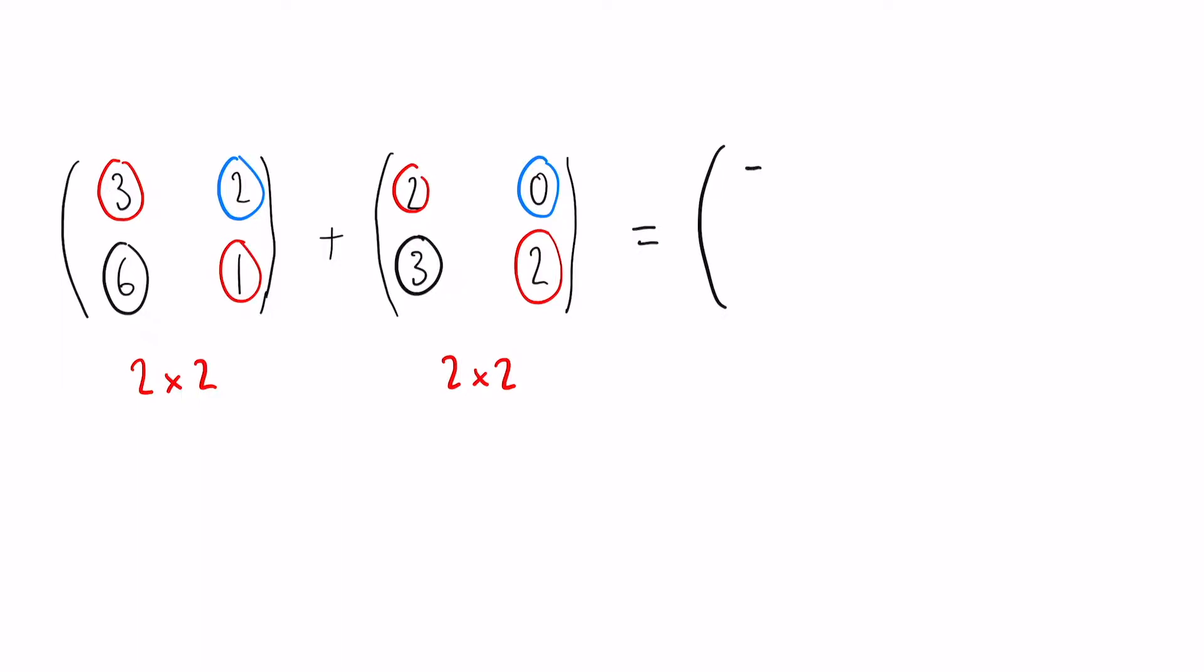2 plus 0 gives us 2, 6 plus 3 is 9, and 1 plus 2 is 3. Subtracting would be the same but rather than adding the numbers you subtract them. As you can see, our result is a 2x2 matrix.